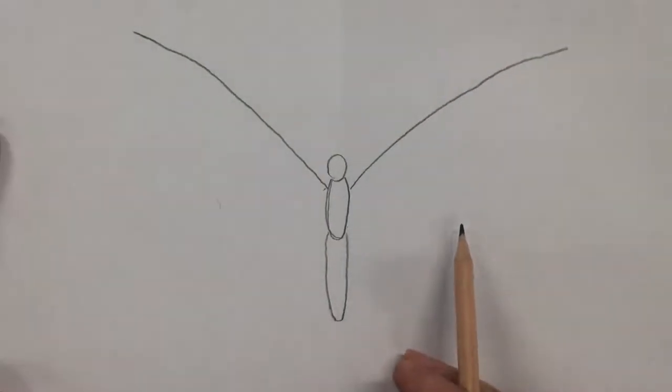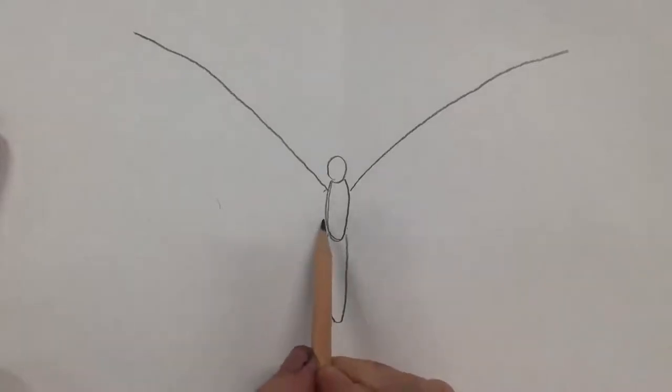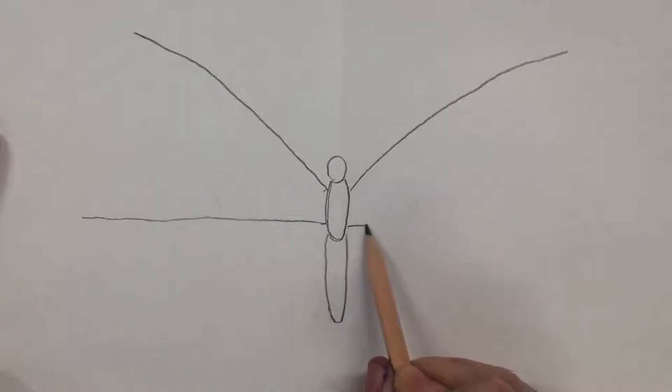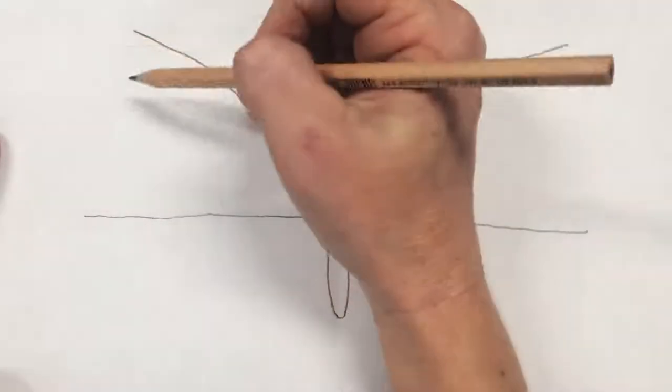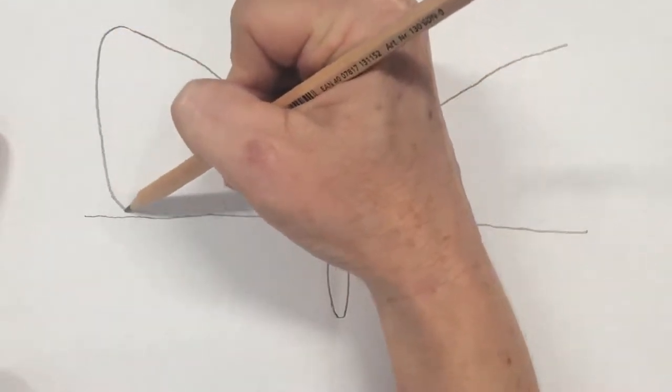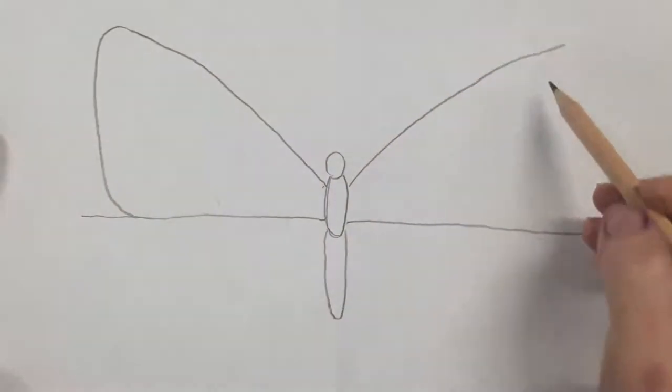Looks like a curvy V shape. And go back to the thorax, do a line going left almost straight, but not so straight that you need a ruler. Curvy V shape. Straight on the other side, and then curve it around. Any extra bits we can rub out later.